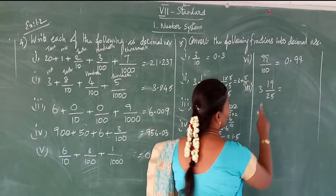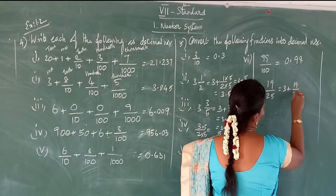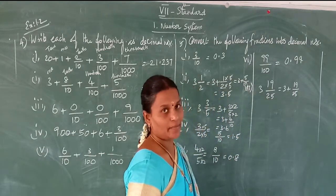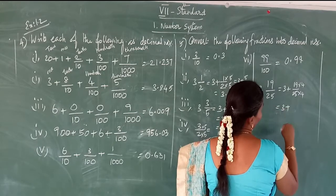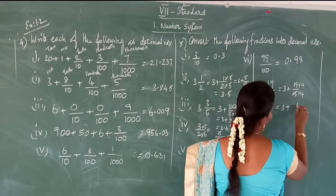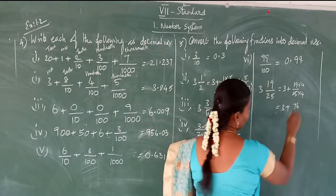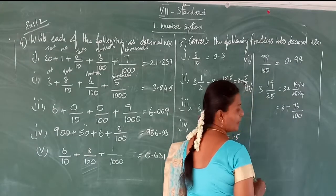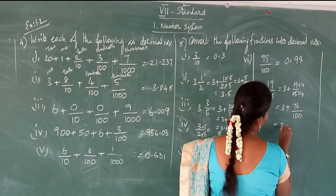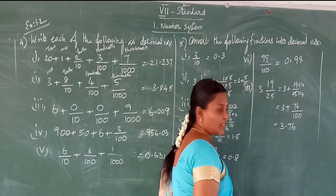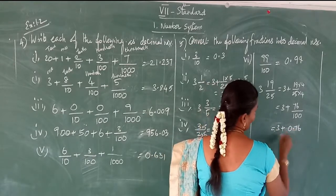See the next one: 3 plus 19 by 25. The whole part is 3. For 19 by 25 — since 25 times 4 is 100, multiply numerator and denominator by 4. 19 times 4: 9 fours are 36, carry 3; 1 four is 4 plus 3 is 7. So 76 by 100 — two decimal places. Answer: 3.76.